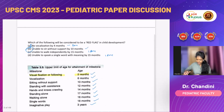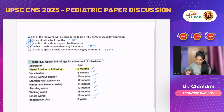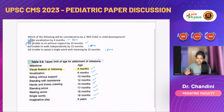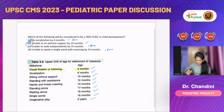Coming to the other red flags or upper ages of attainment: vocalization — when the baby starts to make sounds — the upper age is six months. Sitting without support by 10 months. Standing with support by 12 months. Hands and knees crawling by 14 months. Standing alone by 17 months. Walking and speaking single words by 18 months. Imaginative play by three years. If a child has not achieved these by the upper age of attainment, it indicates developmental delay and the child must be evaluated.